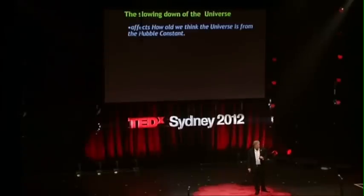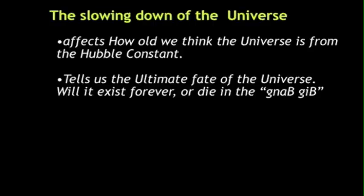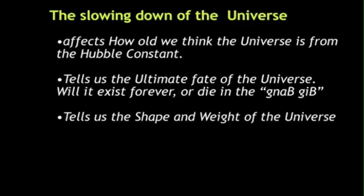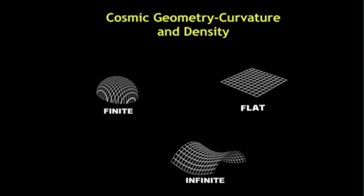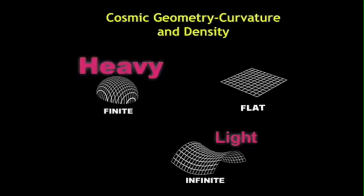So, the slowing down of the universe affects how old we think the universe is from the Hubble constant. It tells us the ultimate fate of the universe, and it also tells us the shape and weight of the universe. So, a heavy universe literally wraps onto itself. It is finite. A light universe wraps away from itself and is infinite. And then there's that just-right universe, the universe precariously balanced between the finite and the infinite.